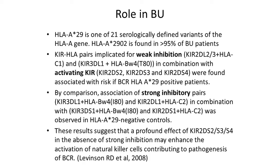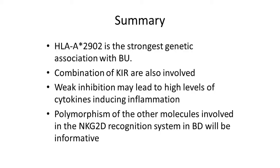You can have HLA-A29 and not have birdshot — it's not a single-gene disease by any means. But these combinations, which we can now type for, give us a handle on what might be happening in birdshot. In summary: the HLA-A29 molecule is the strongest genetic association with birdshot; KIR combinations are also involved; this weak inhibition state may lead to higher cytokine levels inducing inflammation; and polymorphisms in molecules such as the NKG2D recognition system will also be informative — an area we are very interested in following up. Thank you very much.